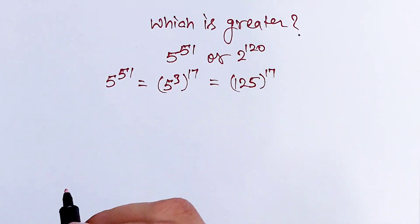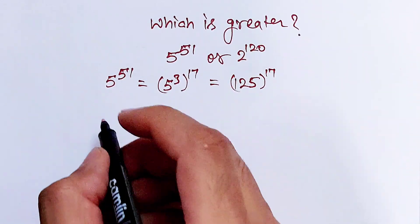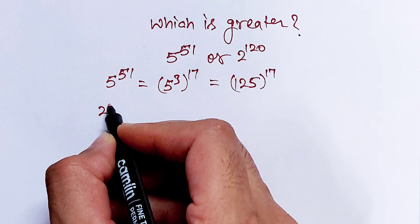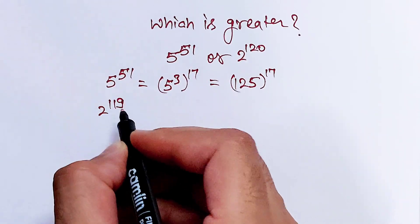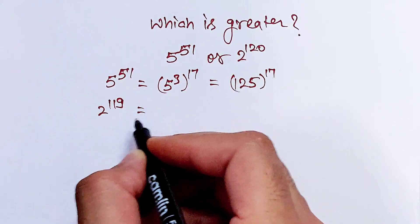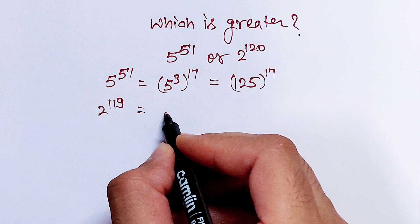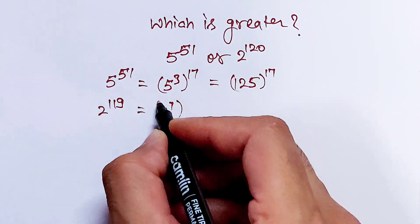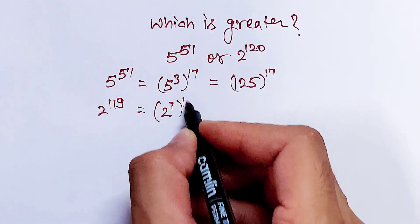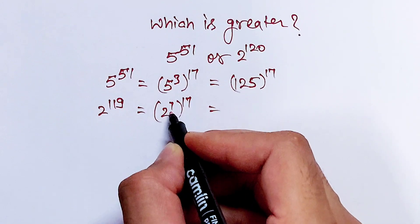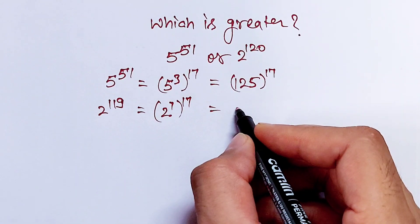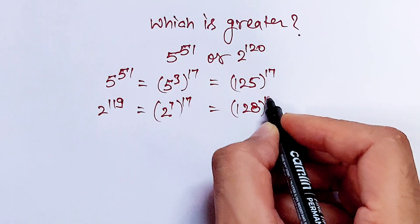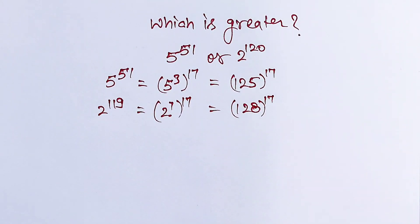Now writing 2 power 119 — this is the same as 2 power 7, whole power 17. And 2 power 7 is equal to 128, whole power 17.